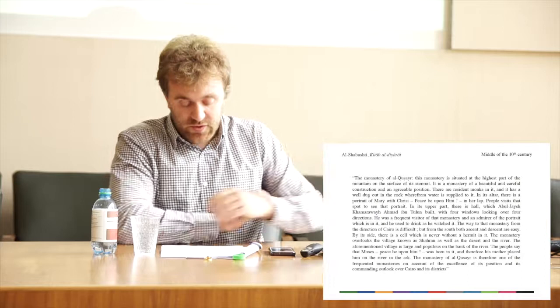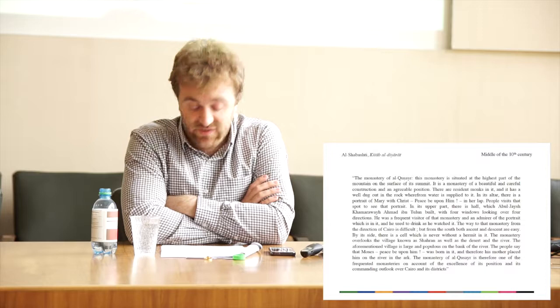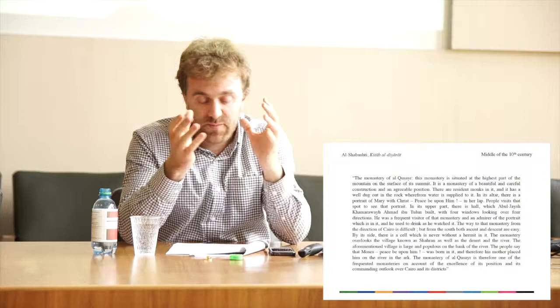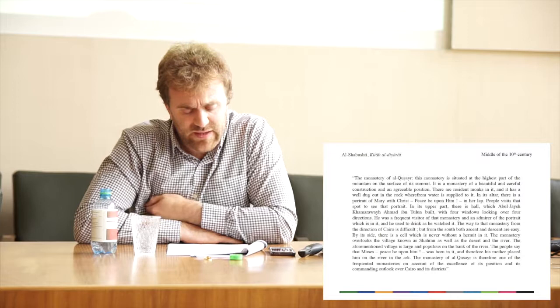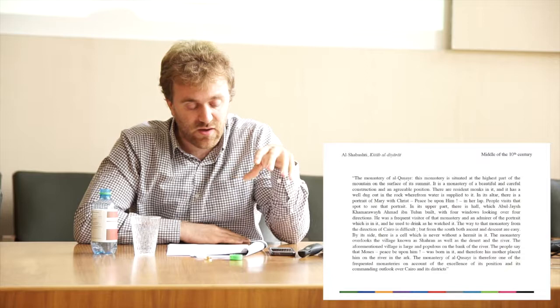While the first work I mentioned was written in a Muslim context, the second work I will mention was written in a Christian milieu. It is the History of the Patriarchs, which is considered the official chronicle of the Coptic Church. The main chapters of the History of the Patriarchs were written in Arabic and sometimes translated from Coptic in different stages between the 9th and the 12th century.